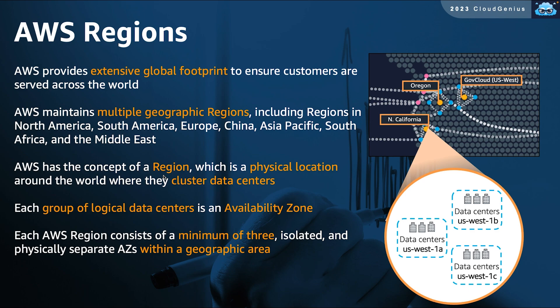Within a region, multiple locations are selected to build multiple availability zones. At a minimum, three availability zones exist per region at three distinct locations within that geographic area, with some exceptions — some AWS regions have four availability zones and others have six, but the most common is three availability zones per region.